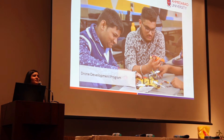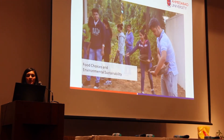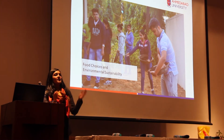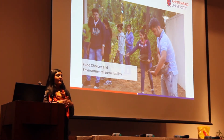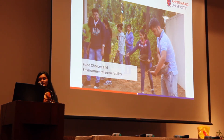Drone development — students developed a drone, and a lot of non-science background students took the course. In 'Food Choices and Environment Sustainability,' students developed their own kitchen garden. That kitchen garden is still working and supplies food to our cafeteria, so we actually use the produce from the kitchen garden in our cafeteria.